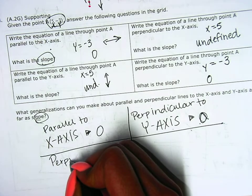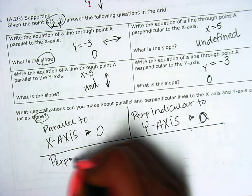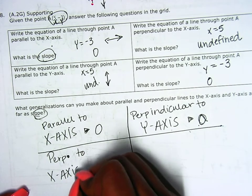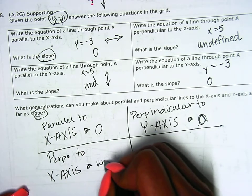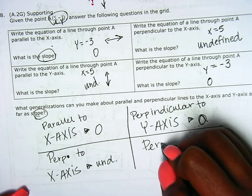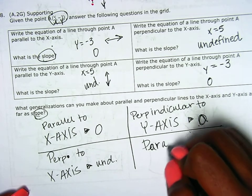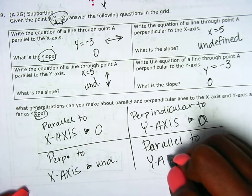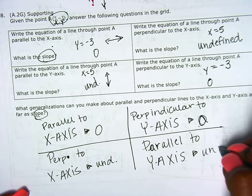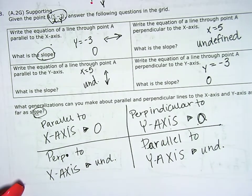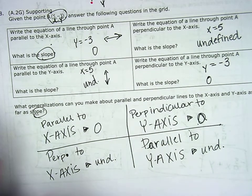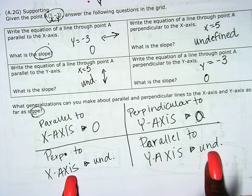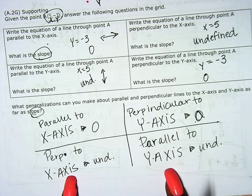If it's perpendicular to the x axis, it has a slope of undefined. And if it's parallel to the y axis, it also has a slope of undefined. So our generalization: slope is undefined if it's perpendicular to the x axis or parallel to the y axis.